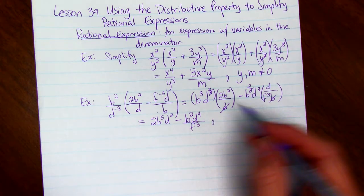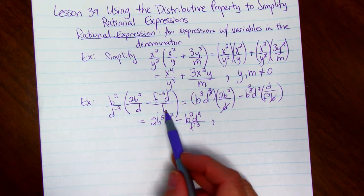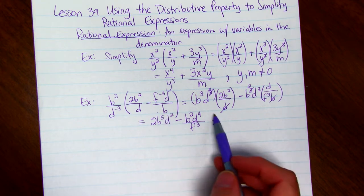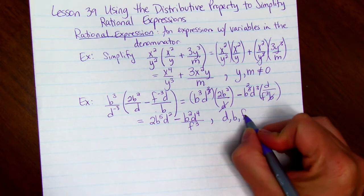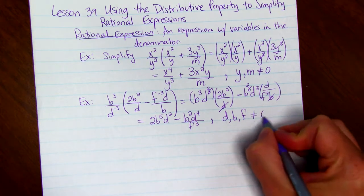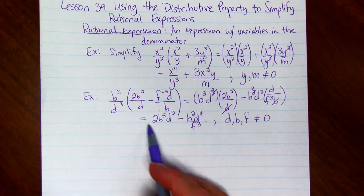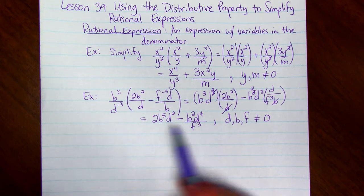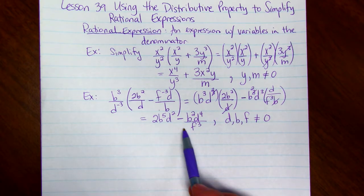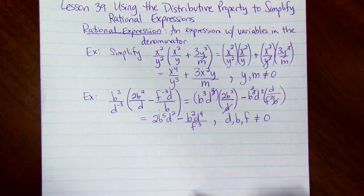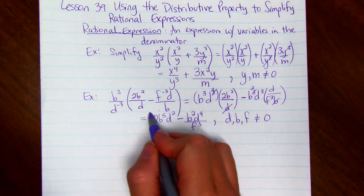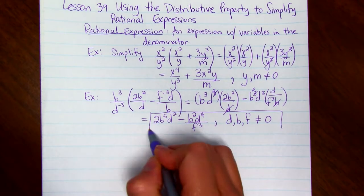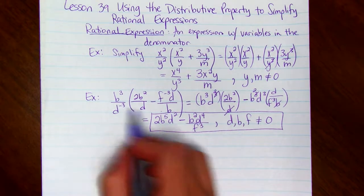Now we have to look at the beginning. We have d's and b's. And then at the end we have f's. So d, b, and f cannot equal 0. You have to list all of the denominators, if they're in the beginning or the end in your answer, so in your simplification. So this is the full answer for the simplifying of this problem.